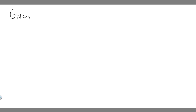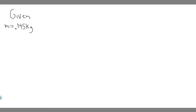Before we solve this problem, the first thing we should do is write down the given, and then based on the given, we're going to figure out how to solve it. The first thing we know is the mass of our baseball, which is 0.145 kilograms. And then we're given two different velocities: the velocity when it's pitched and the velocity when it's hit back.